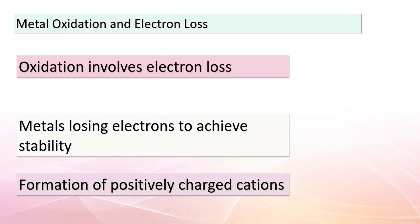Now that we've grasped ionization energy and its connection to metal behavior, let's delve deeper into metal oxidation. This process revolves around electron loss. Metals, driven by their low ionization energies, willingly release electrons as they react in order to achieve stability. This electron loss results in the creation of cations — positively charged ions. Imagine metals as generous donors, sharing their electrons to achieve a balanced state — like giving away extra electrons to attain harmony. This principle is evident in various reactions we encounter every day.